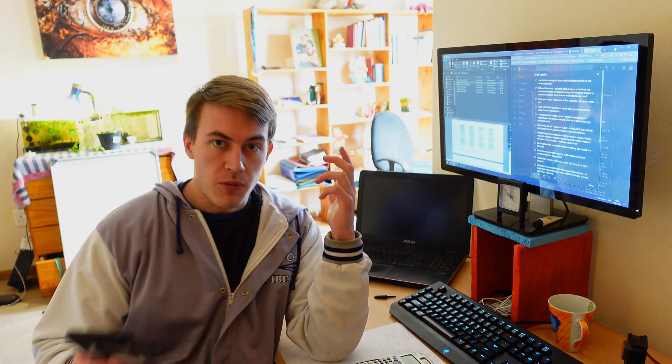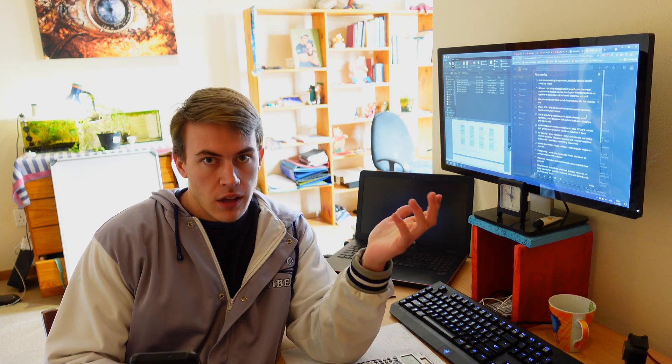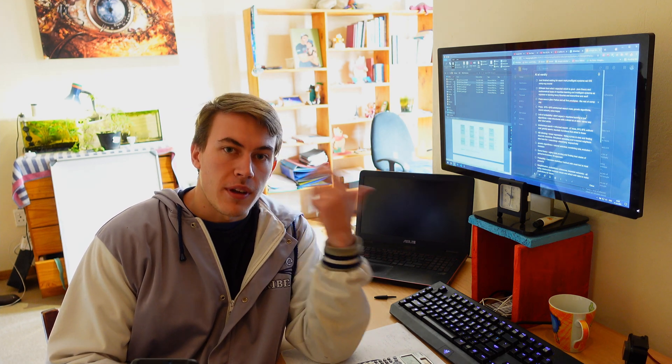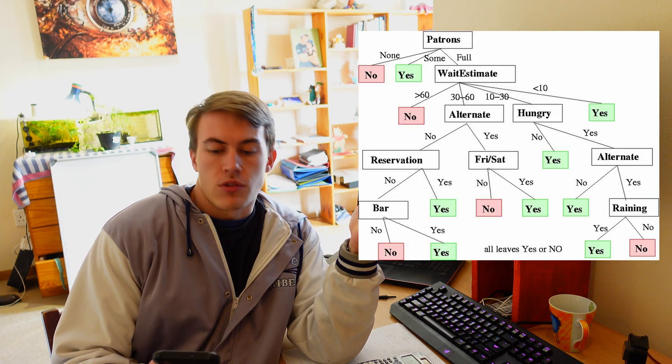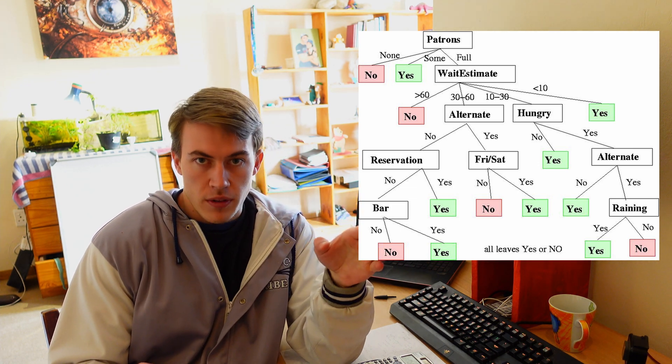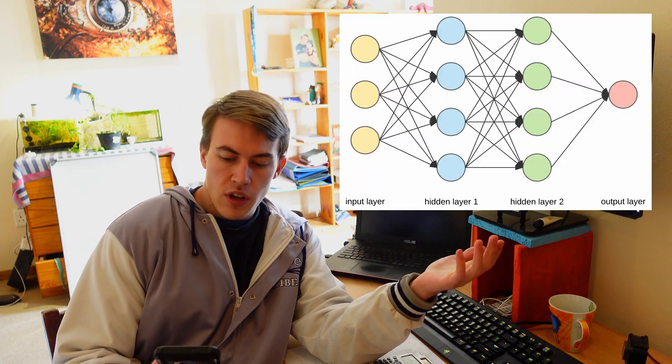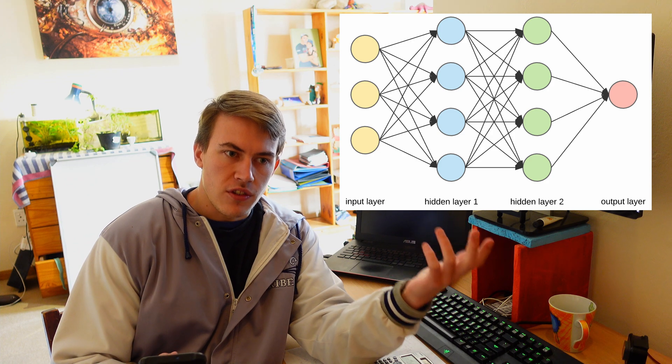Then later in the semester we actually come around to the things that most people generally consider to be artificial intelligence, or the useful applications of artificial intelligence. And that is learning—supervised and unsupervised learning—whether or not your learning algorithm gets feedback while it's busy training itself. Using things like classification and regression with decision trees, which are big lists of decisions to take when deciding on a program or when deciding on what sequence of actions to take during a program.